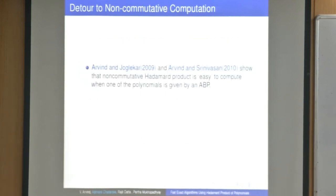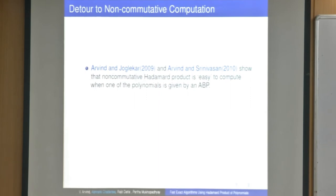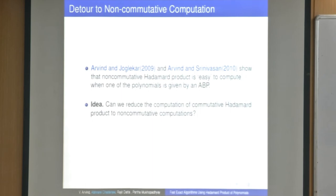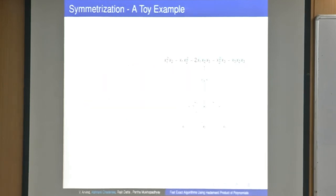From previous work by Arvind, Pushkar, and Srikant, it is known that the Hadamard product is easy to compute when one of the polynomials is given by the ABP model. So the question is: can we reduce the computation of the commutative Hadamard product to non-commutative computation, since we know non-commutative Hadamard product is easy to compute?